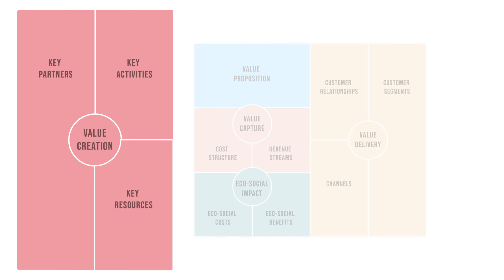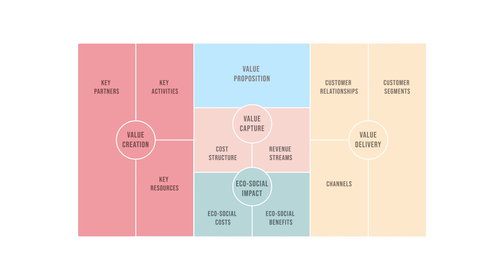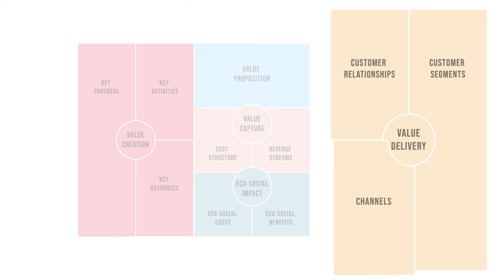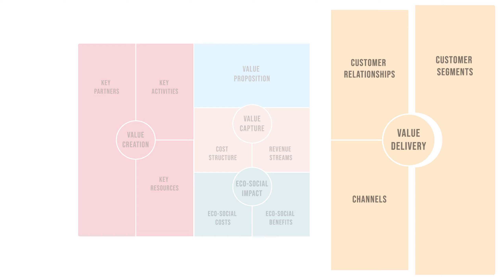All physical and intellectual properties and human and financial resources required for your key activities are captured in key resources. On the top right is described how value is delivered. Customer relationships denotes the type of relation you want to build with your customers. Channels capture all the ways you will use to get in touch with your customers in all phases of your business cycle — you want your channels to be as efficient as possible and integrated with customer routines. In customer segments, the type of customer you want to create value for is listed.